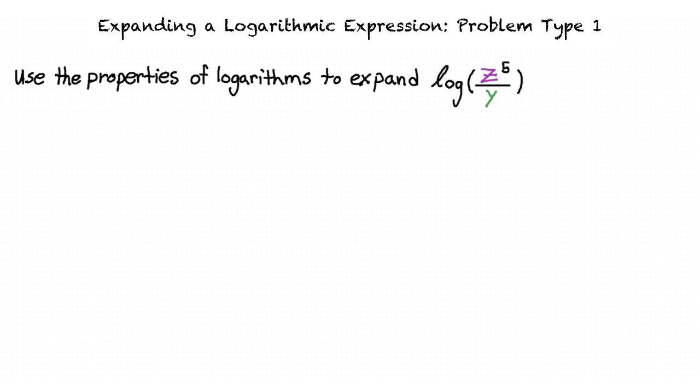Okay, so according to the logarithm quotient rule, the logarithm of z to the fifth power divided by y could also be represented as the logarithm of z to the fifth power minus the logarithm of y, right?